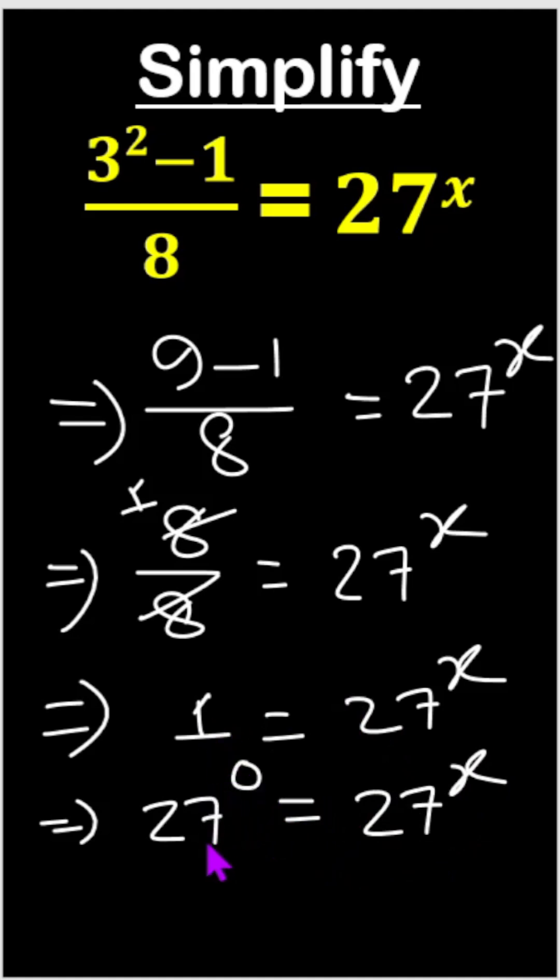Here the base is the same. We know that when bases are the same, then powers will be equal. Therefore, we can write x = 0, and this is our answer.